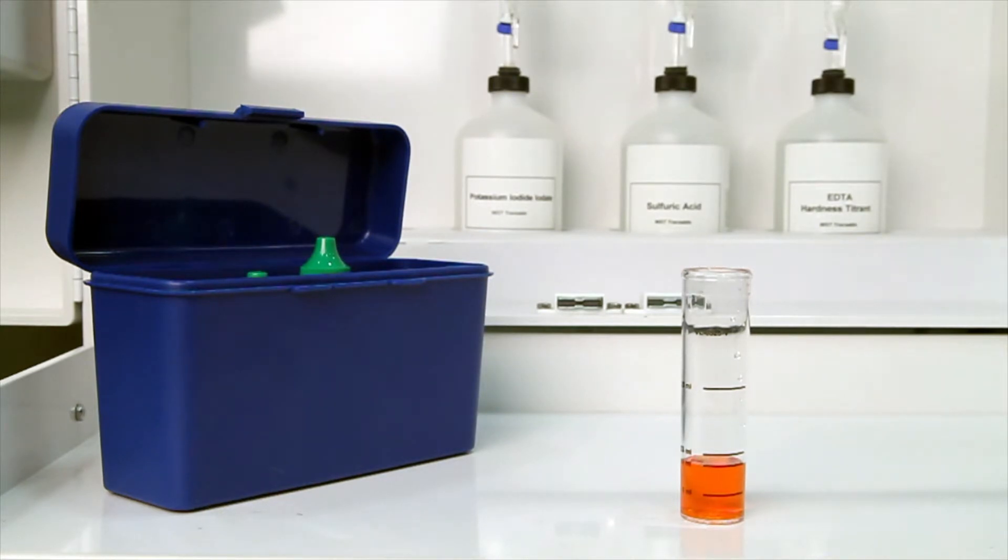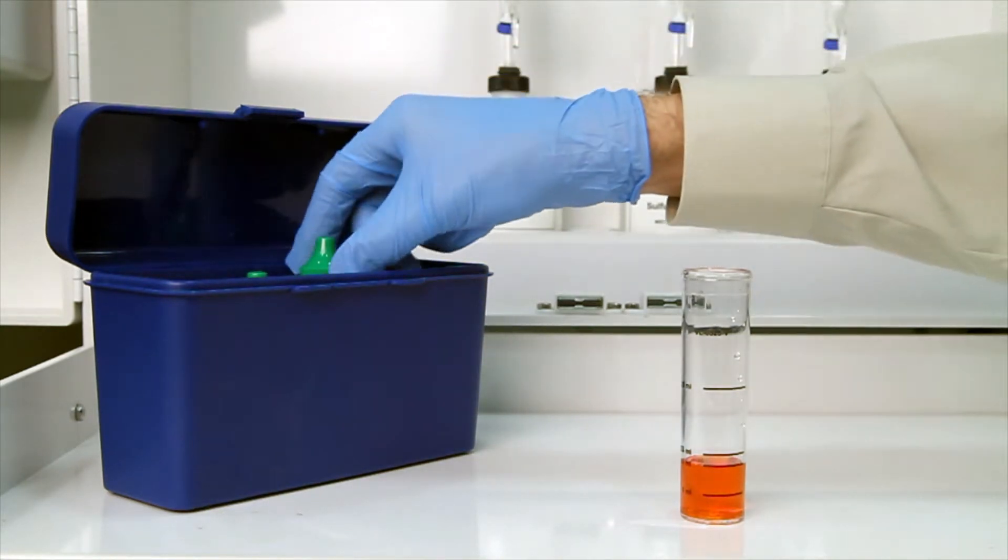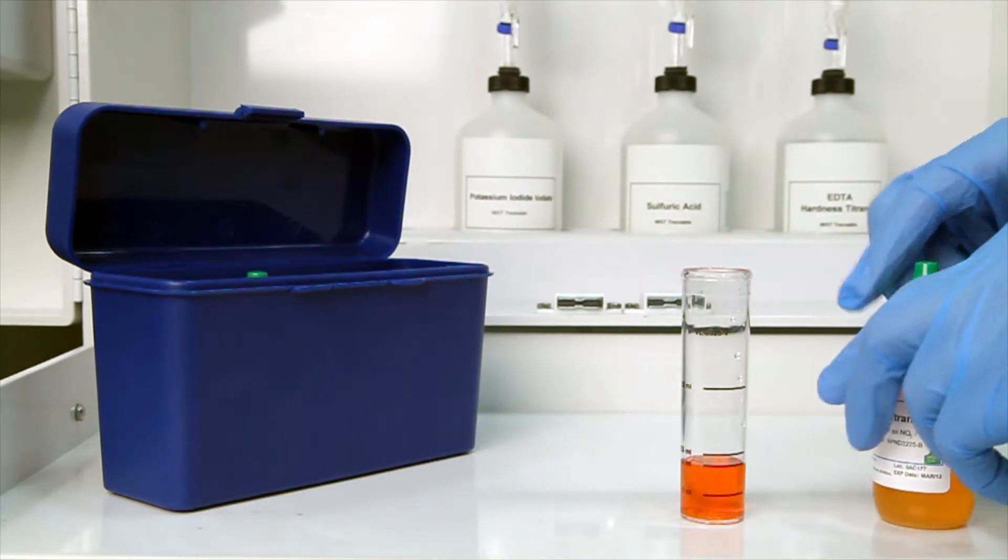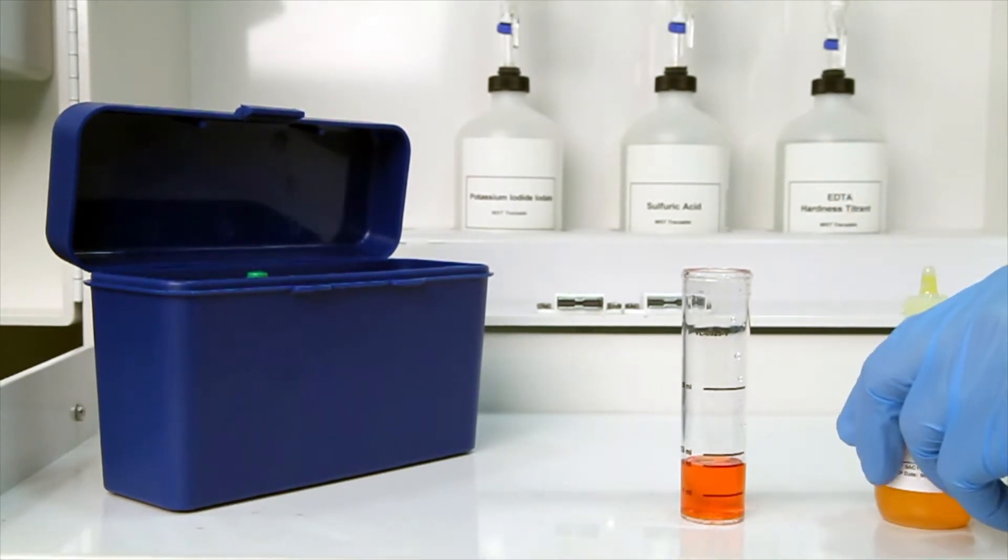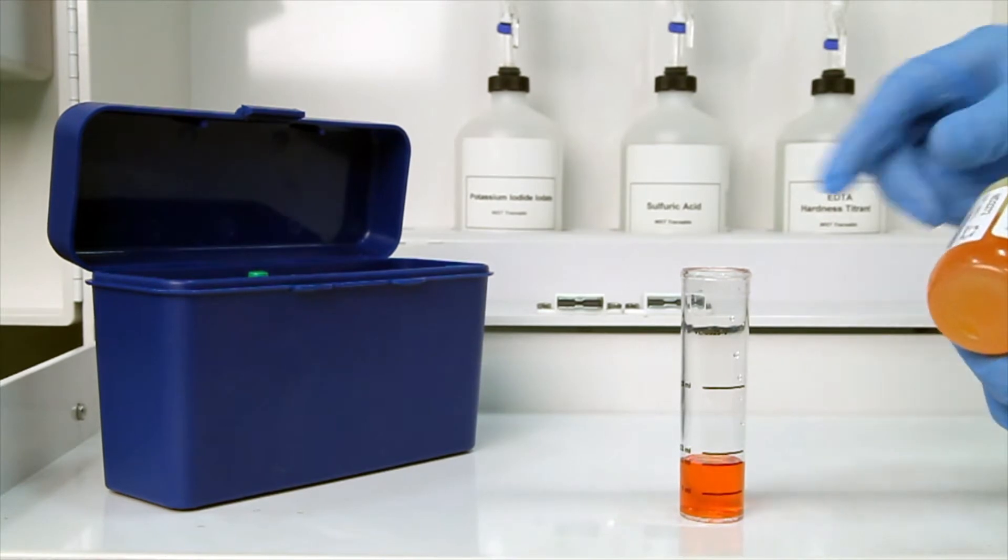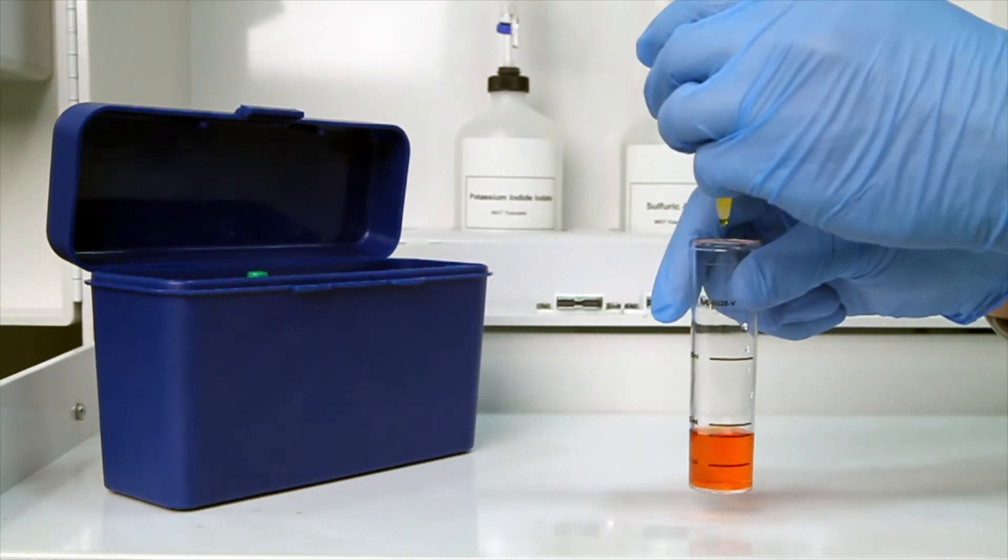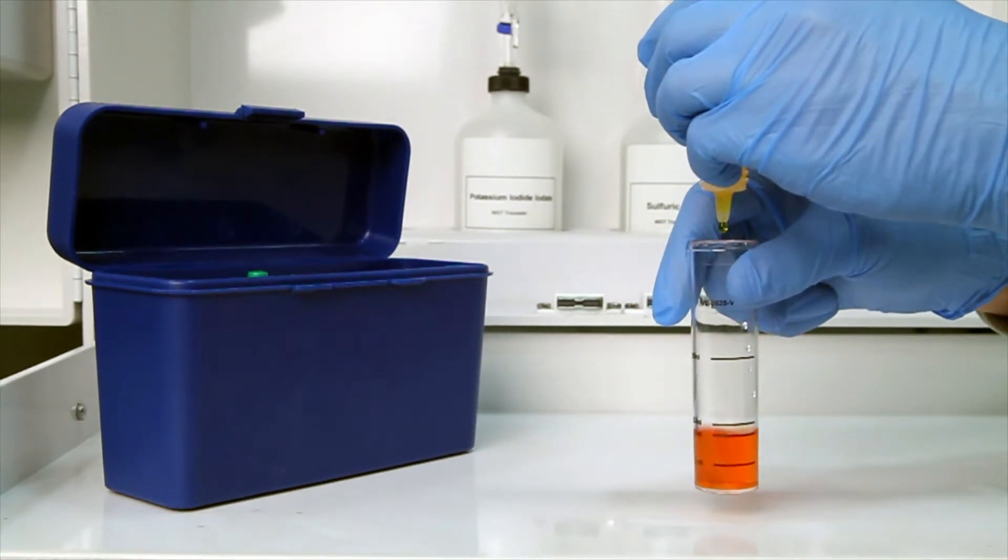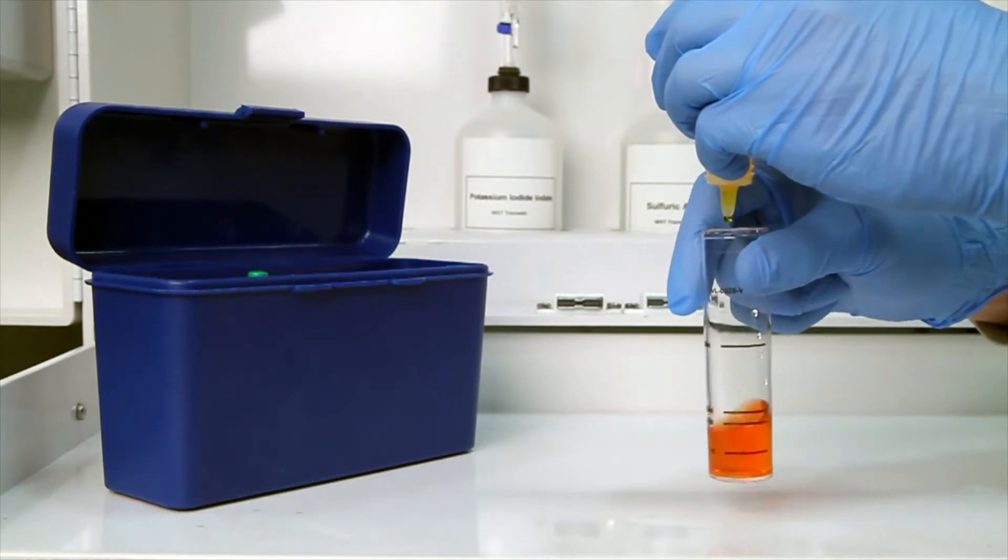The next step is to perform the titration using seric sulfate 0.0791 normal. Each bottle of titrant is labeled with the equivalency and sample size it was manufactured for. It's important to make sure you have the proper titrant and the proper sample size for this titration.